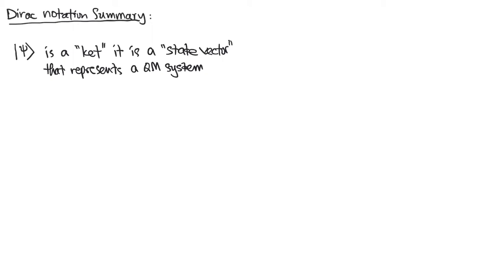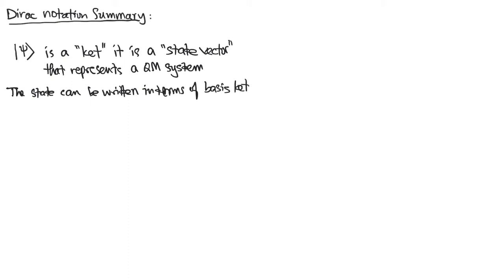The state can be written in terms of a set of basis kets. Any state can be written in terms of basis kets, and this is similar to unit vectors if we talk about our standard vectors.